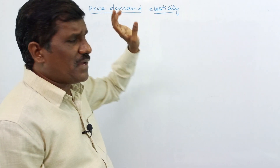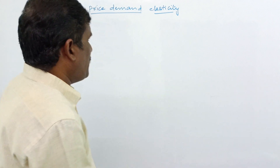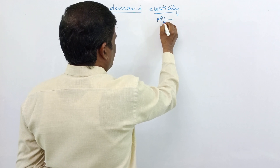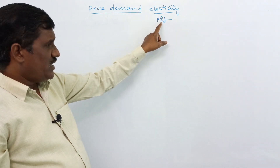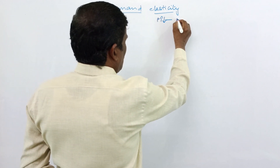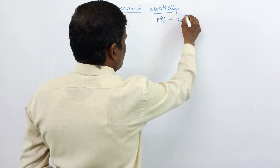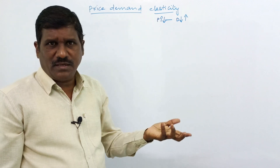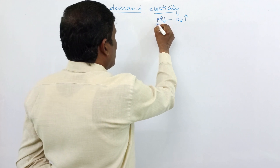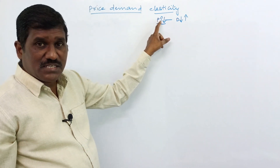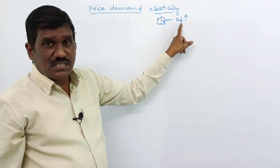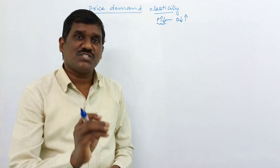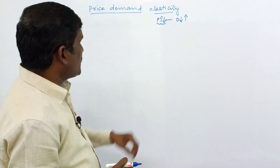What is the price demand elasticity? When the price increases or decreases — that is, when price changes — automatically the demand will also change. Price increases, demand decreases; price decreases, demand increases. The proportionate change in demand divided by the proportionate change in price is called elasticity.